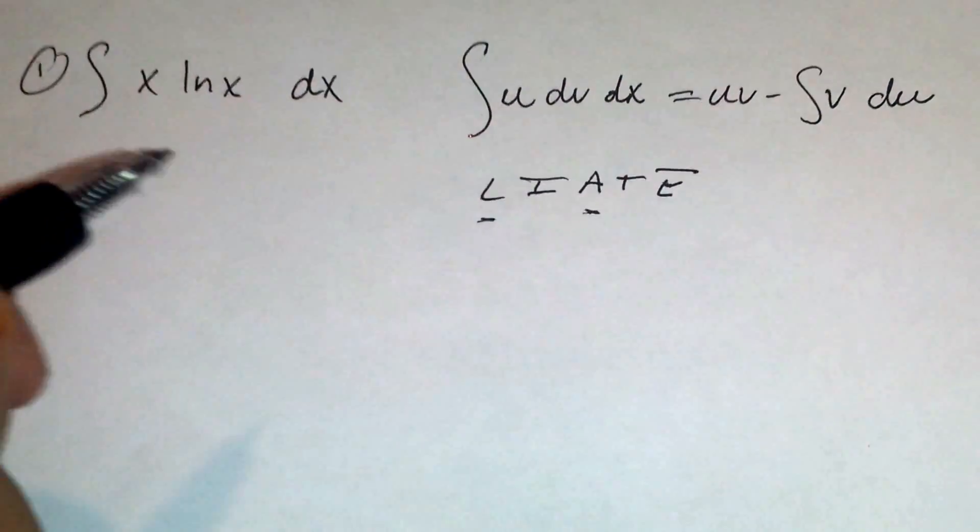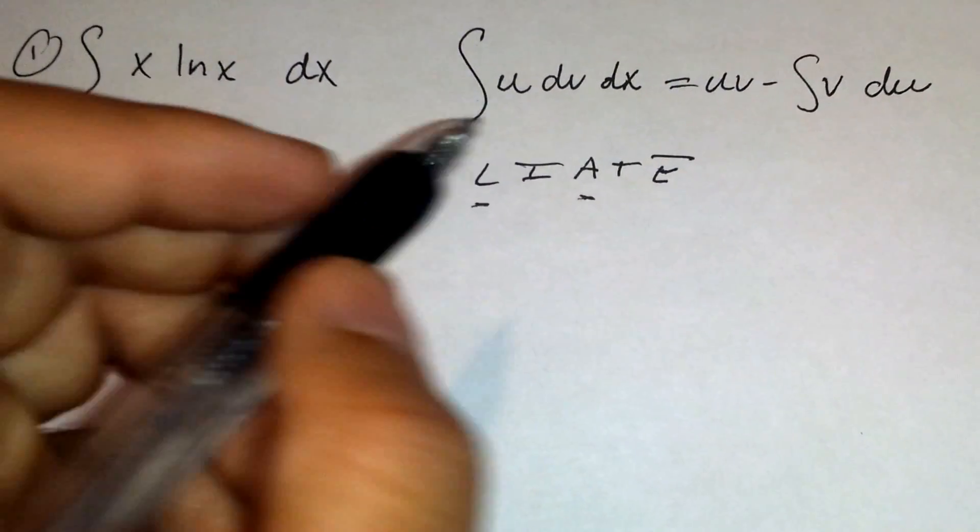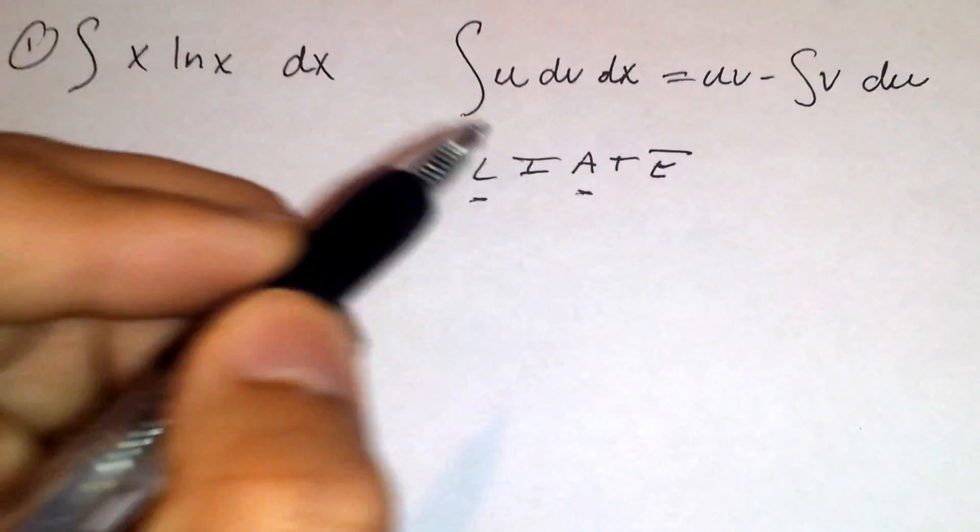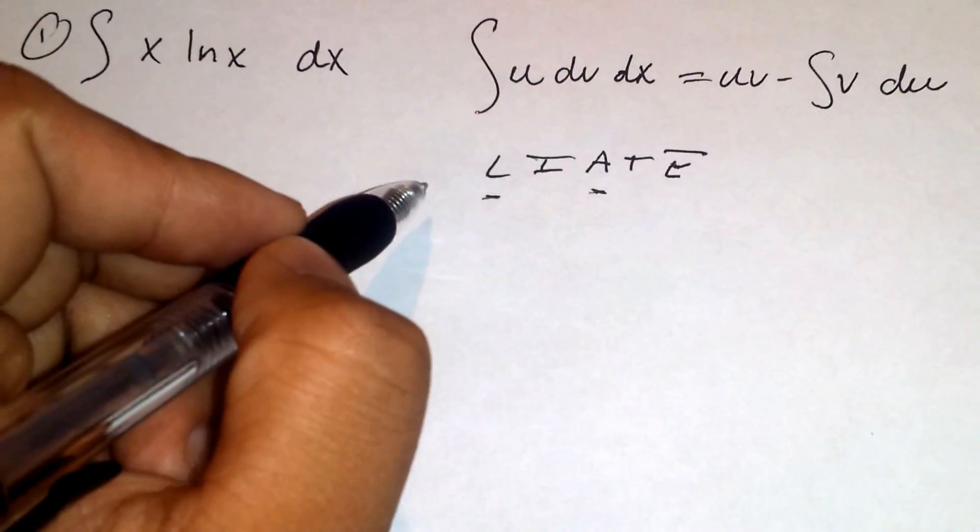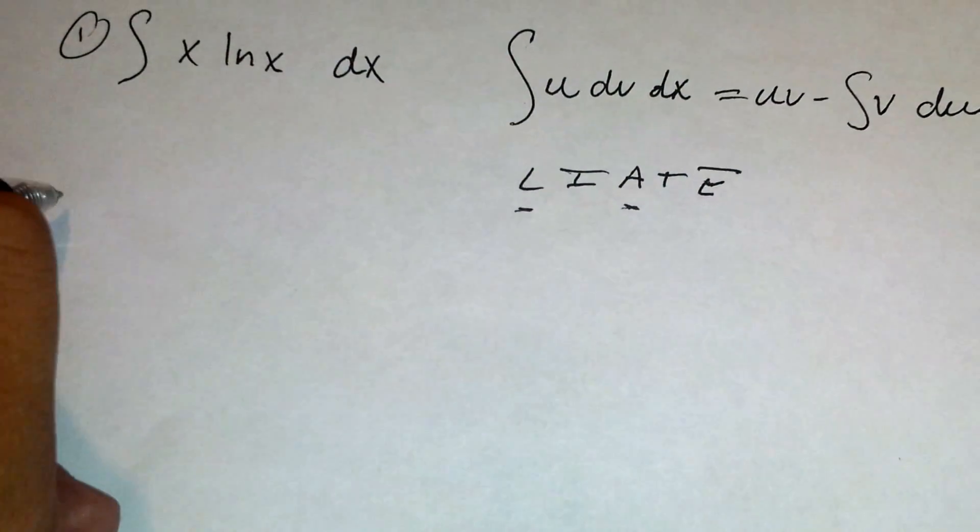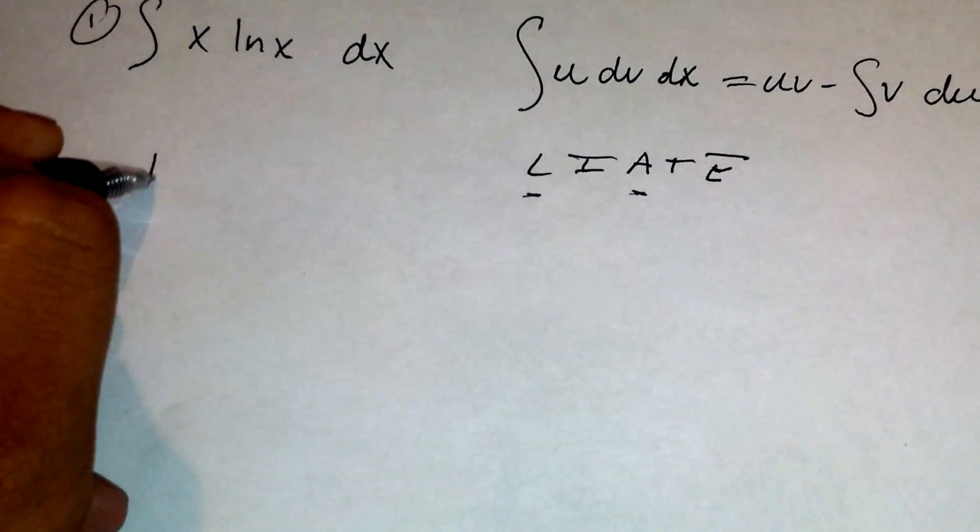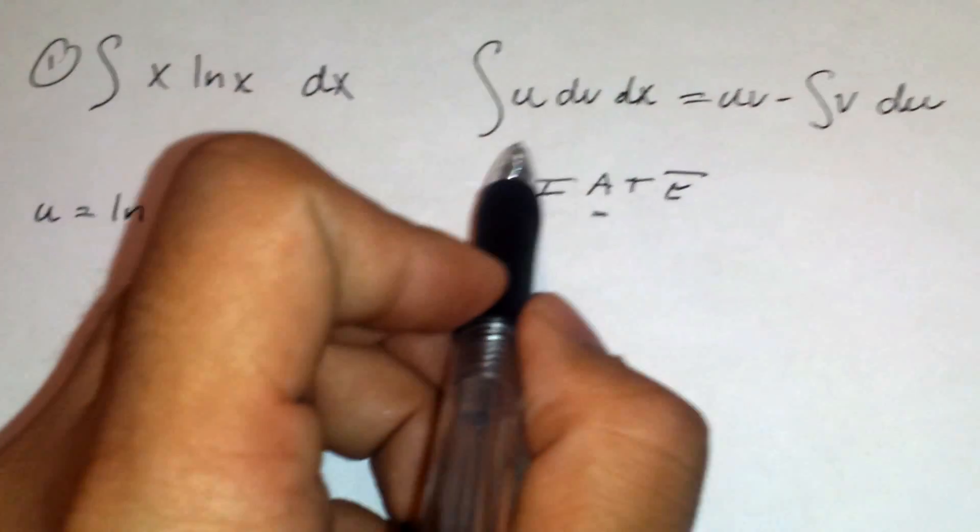The rule is that you always set whatever term comes earlier in this acronym as u. So ln is logarithmic, x is algebraic, and logarithmic comes first in this list. So we will set our u to ln x, and now we need to find the other parts.